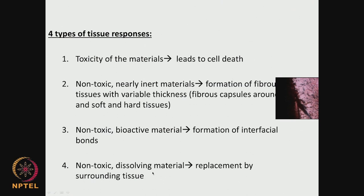Ideally this could be used in tissue engineering — growing tissues with bio-resorbable polymers, placing them inside, the tissue grows, and the material disappears. Maybe one day we will have cardiovascular stents which are completely bio-resorbed, unlike current stents made of nickel or titanium. So there are 4 types of situations: toxic biomaterial or leaching from the material leading to cell death; non-toxic nearly inert leading to fibrous encapsulation; non-toxic bioactive with formation of interfacial bonds; and non-toxic dissolving material with replacement by surrounding tissue.